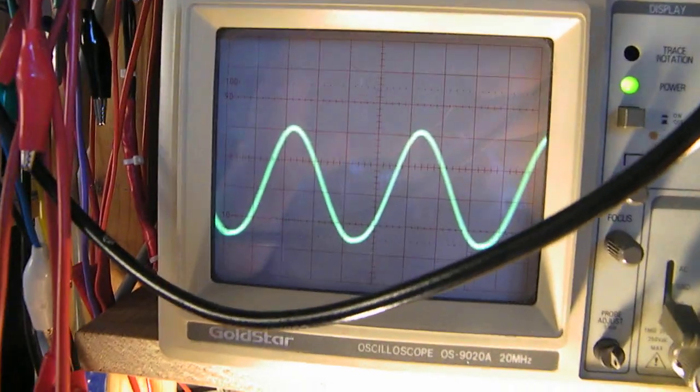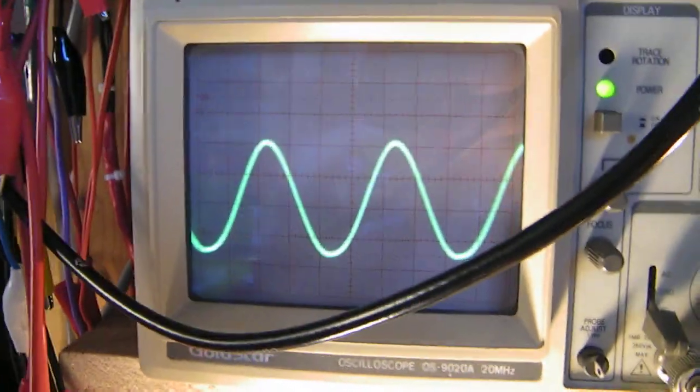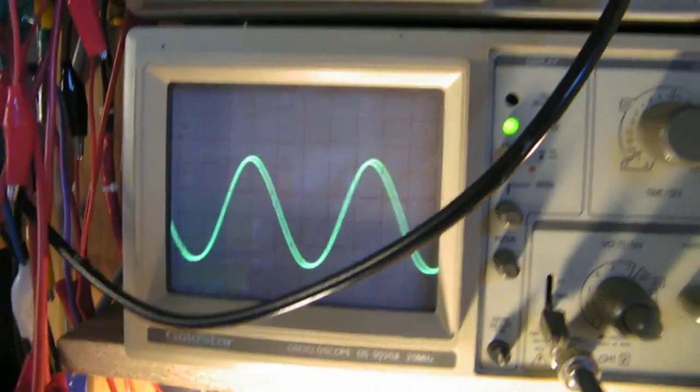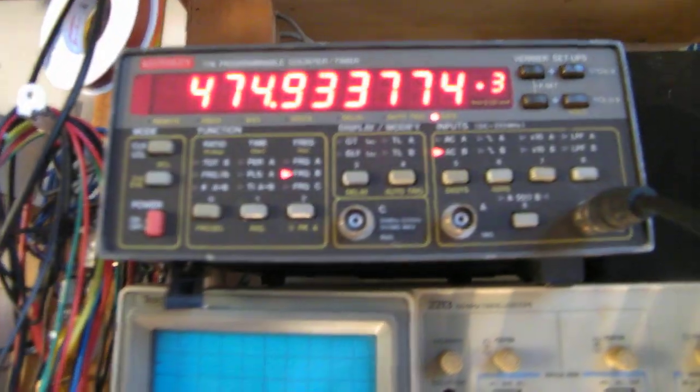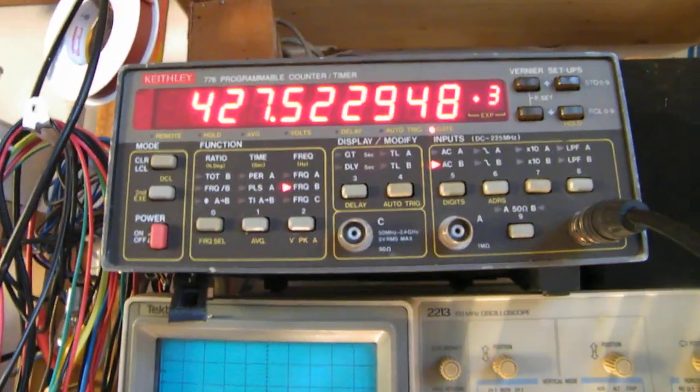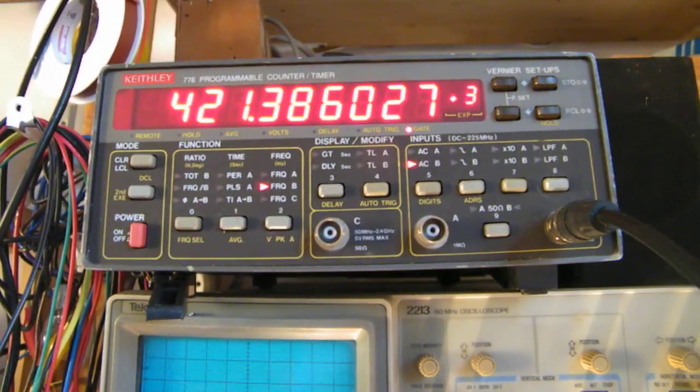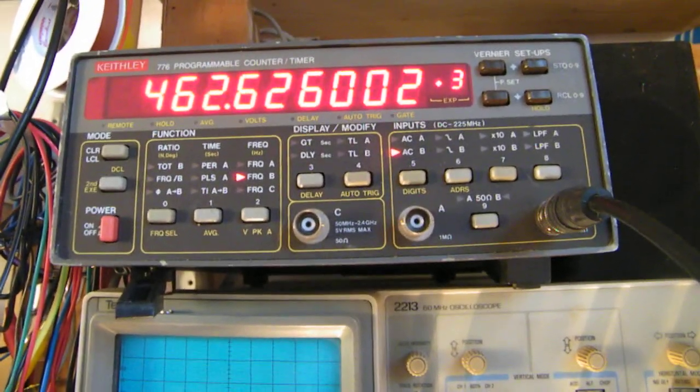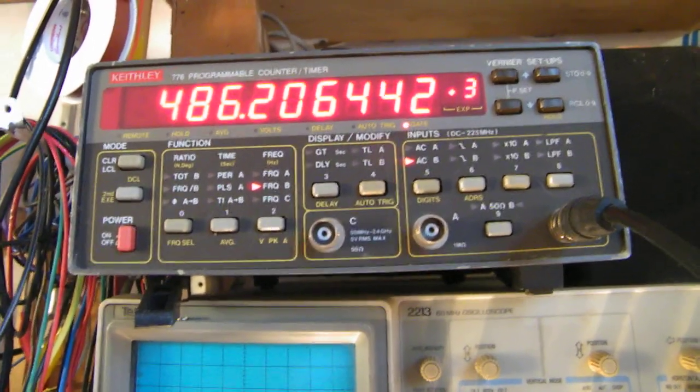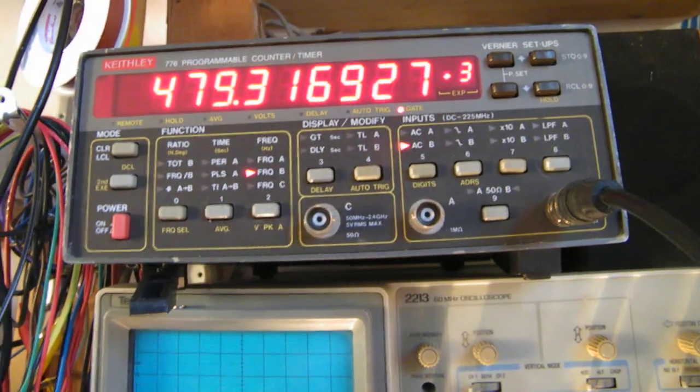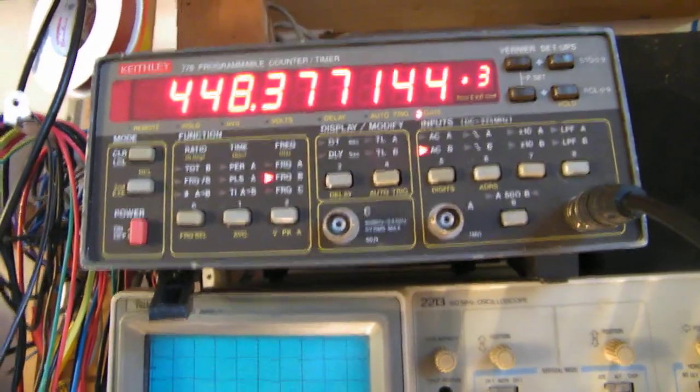I switched on the BFO now. You can see the output signal. When I turn this knob, you can see that it changes. At the moment it changes between 421 to 486 kilohertz. So that's a big range, and that's good.